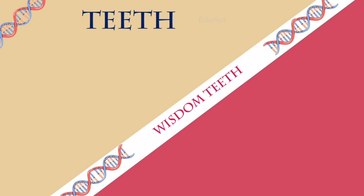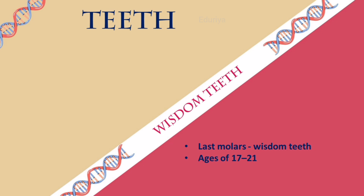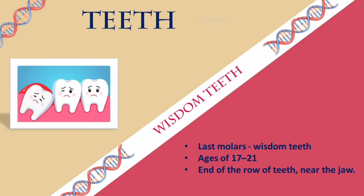Wisdom teeth are the last molars to grow. They usually come in between the ages of 17 and 21. They grow at the end of the row of teeth near the jaw. People do not need these teeth for chewing and they are difficult to keep clean because of their position far back in the mouth.